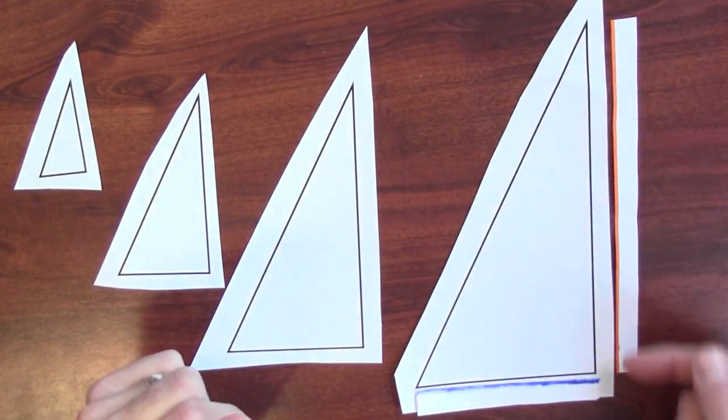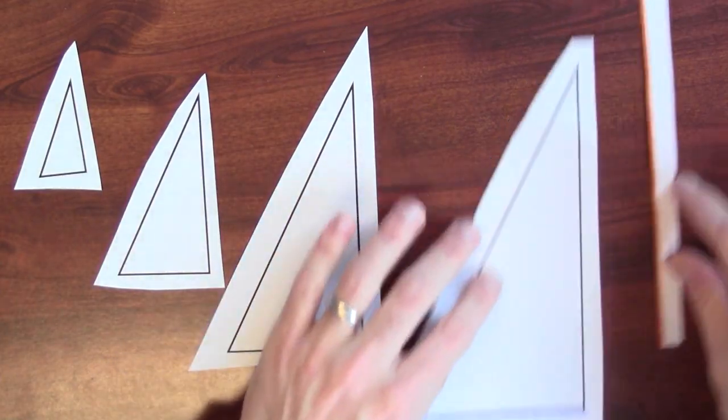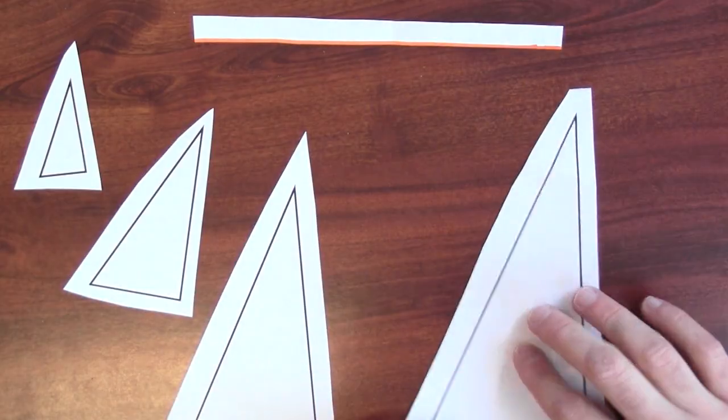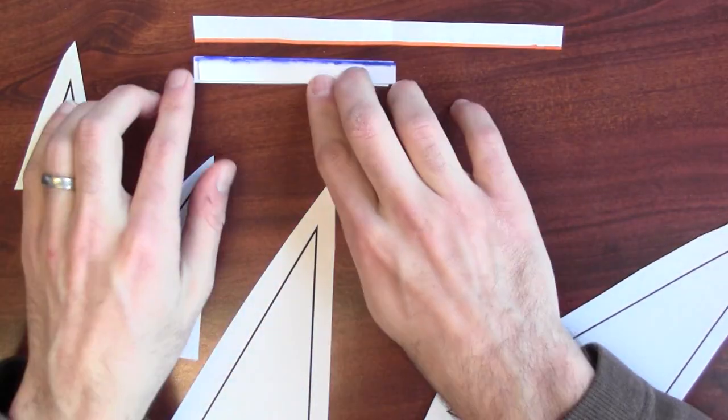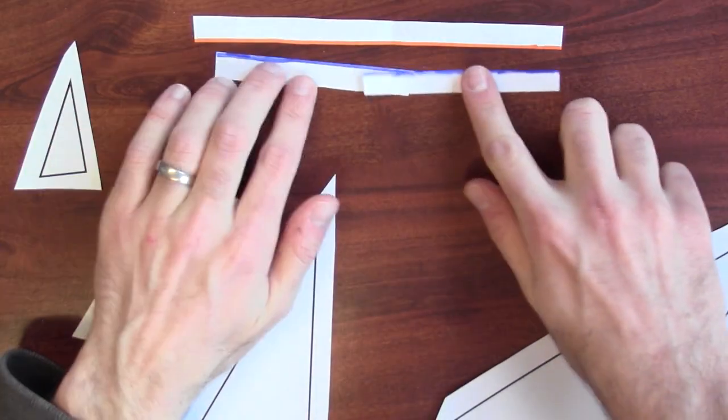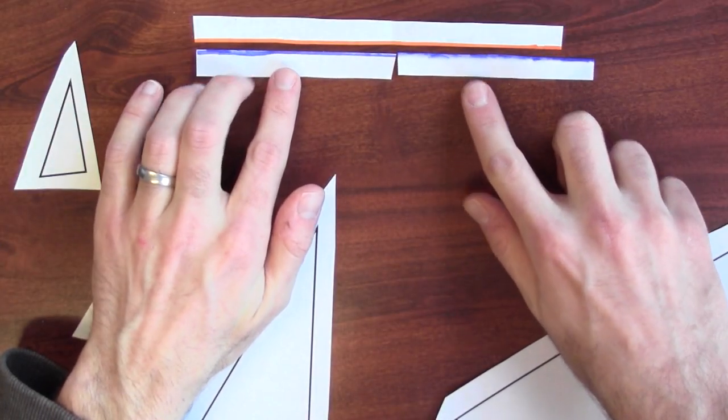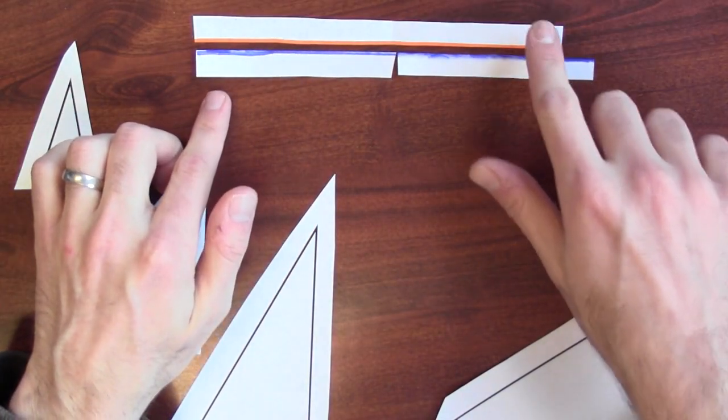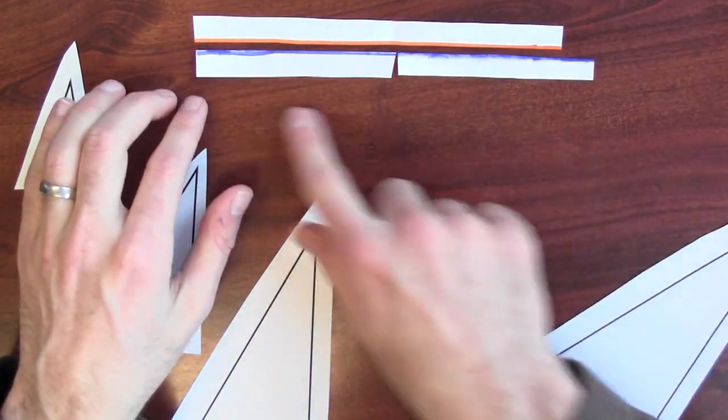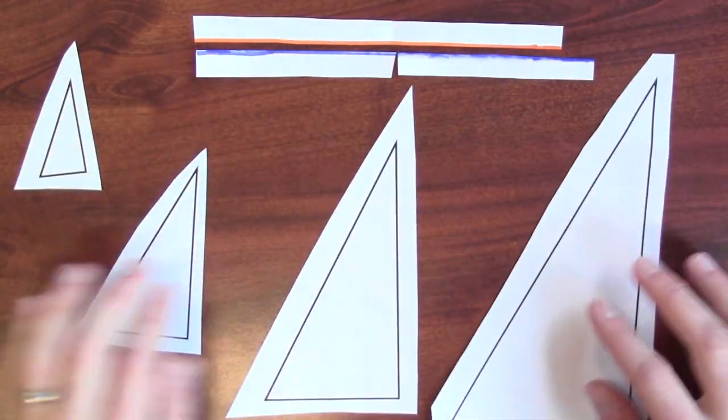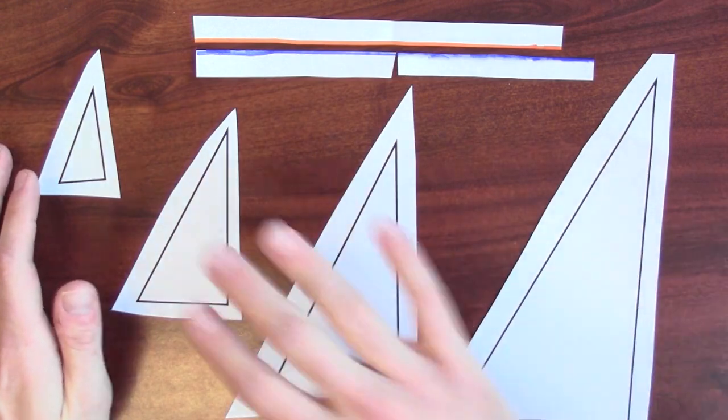But look at the ratio of this height to this width. Here's the height, here's the width. And if I double the width, it's a little bit more than the height. In other words, the height is just a little bit less than twice the width, and that's true for all of these triangles.